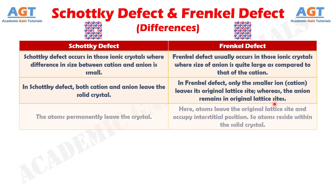Number 3: In Schottky defect, the atoms permanently leave the crystal, whereas in Frenkel defect, atoms leave the original lattice site and occupy an interstitial position. So the atoms reside within the solid crystal.